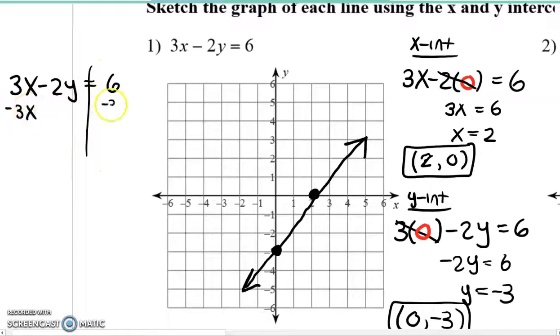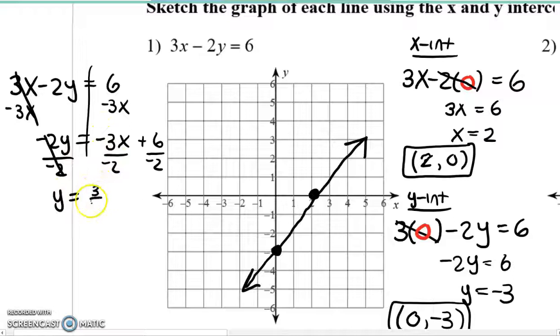We're going to subtract the 3x from both sides. So, we're going to have negative 2y equals negative 3x plus 6. We're trying to write this in slope-intercept form, remember? So, y equals negative three divided by negative two is three over two x. Six divided by negative two is negative three. So, if I now take a look at this, right? Here's my y-intercept is negative three. There it is.